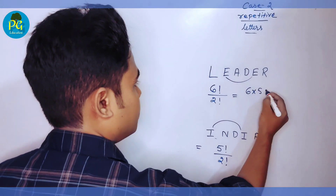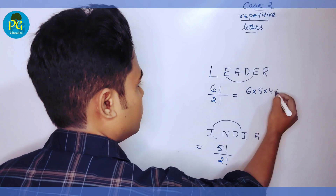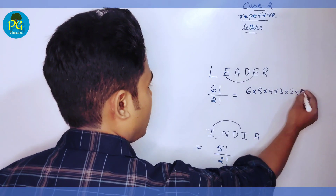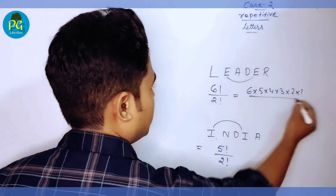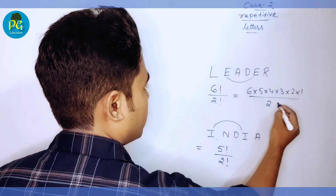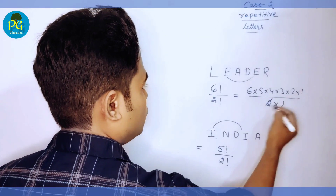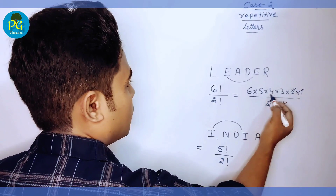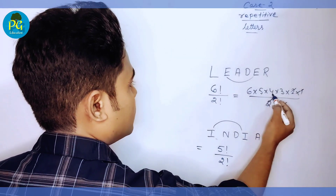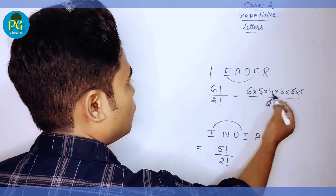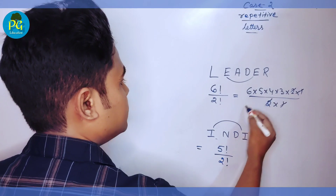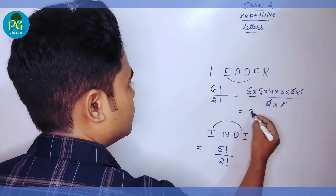For LEADER: 6!/2! = (6 × 5 × 4 × 3 × 2 × 1) ÷ (2 × 1). The 2 × 1 cancels, giving us 5 × 4 × 3 × 6 = 360.